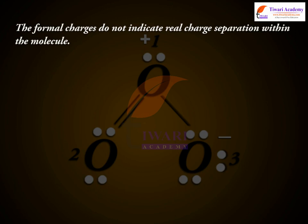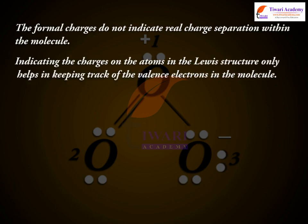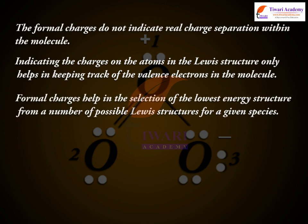The formal charges do not indicate real charge separation within the molecule. Indicating the charges on the atoms in the Lewis structure only helps in keeping track of the valence electrons in the molecule. Formal charges help in the selection of the lowest energy structure from a number of possible Lewis structures for a given species.